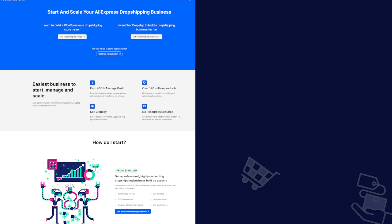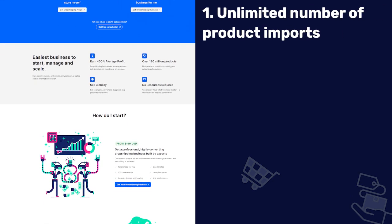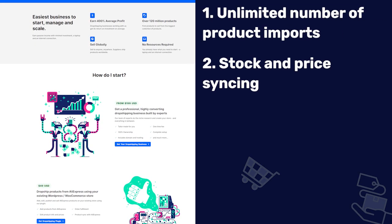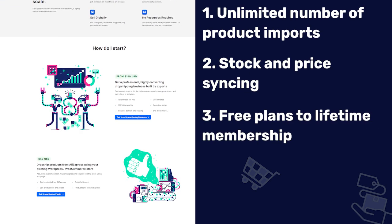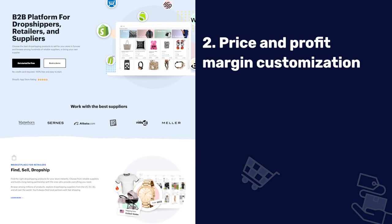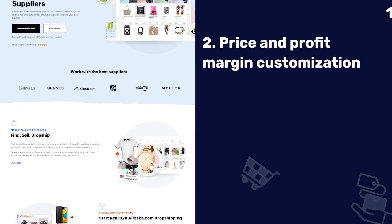Next on our list is WooDropship, an automation plugin for WordPress and WooCommerce stores. With this plugin you can only sell products from AliExpress, similar to Oberlo, but it has great features like an unlimited number of product imports, stock and price syncing, and free plans for lifetime memberships.